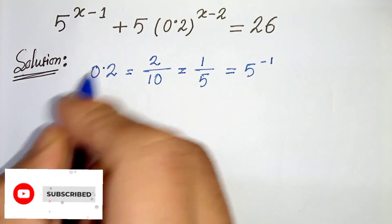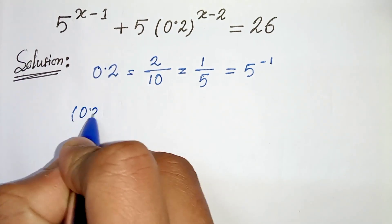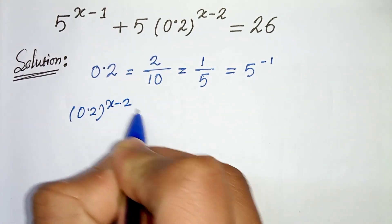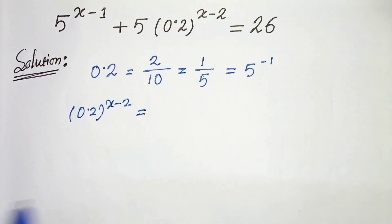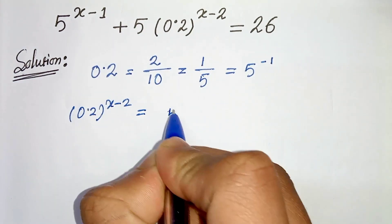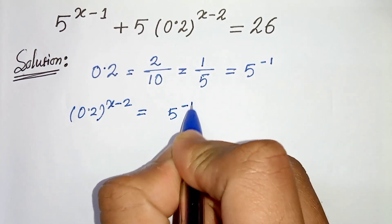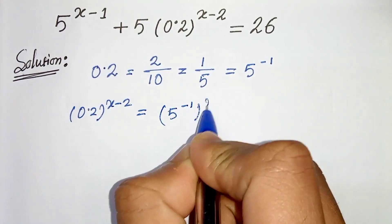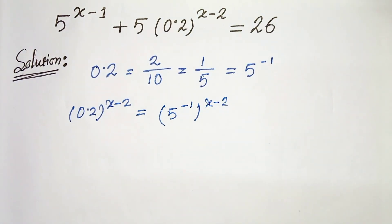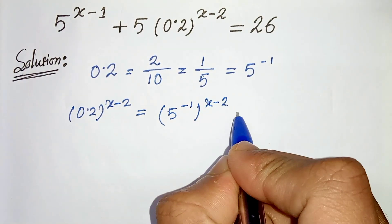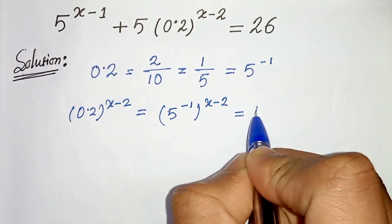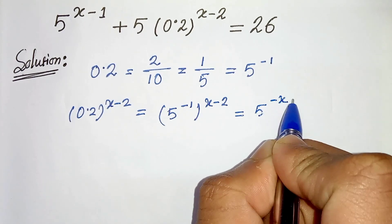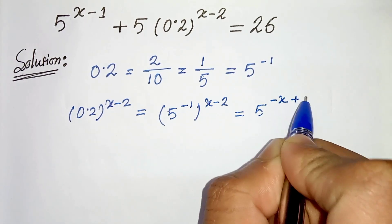So we can write 0.2 to the power x minus 2 equals to — since 0.2 is 5 to the power minus 1 — whole to the power x minus 2, so we can write 5 to the power minus x plus 2.